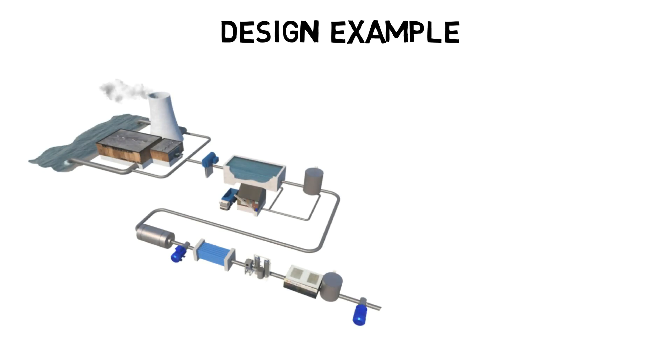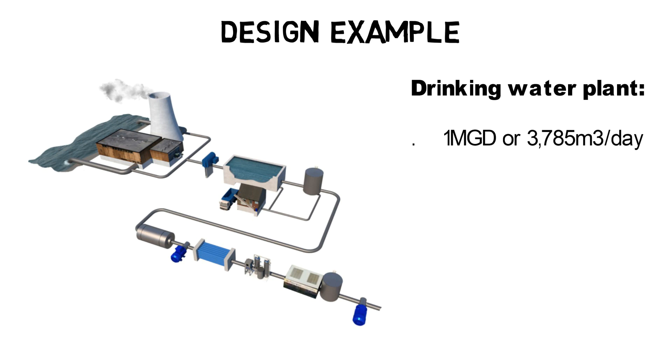To explain how tube settlers are designed, let's take a look at the following example. A drinking water plant has a monthly maximum flow of one MGD or 3,785 cubic meters per day.